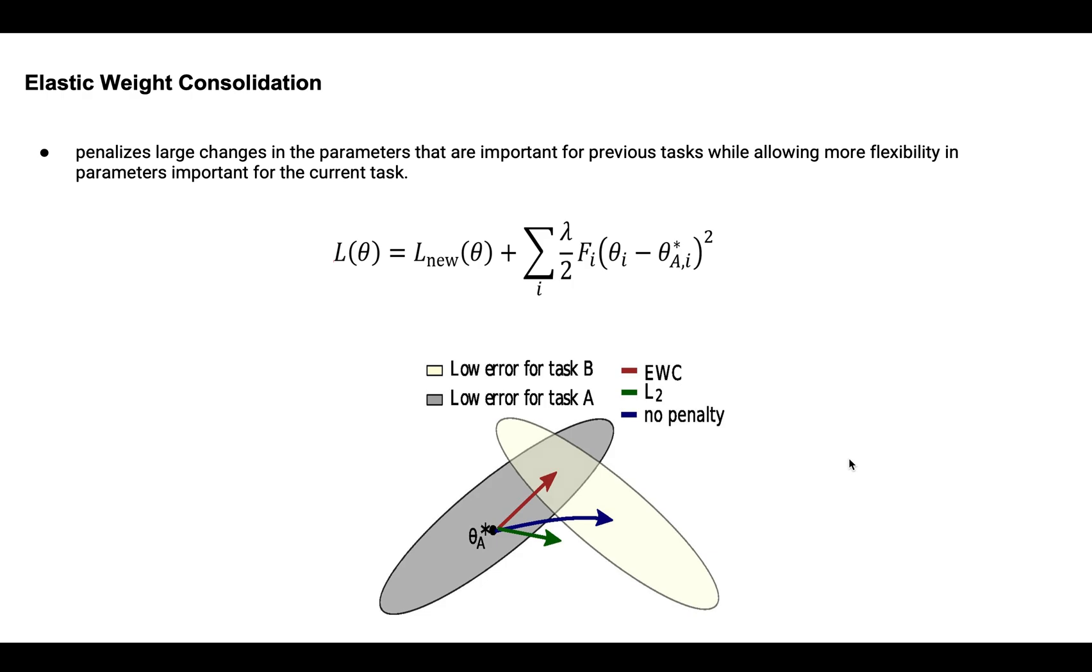What is catastrophic forgetting? Catastrophic forgetting happens when we try to develop artificial neural networks that can learn continuously from sequential tasks.